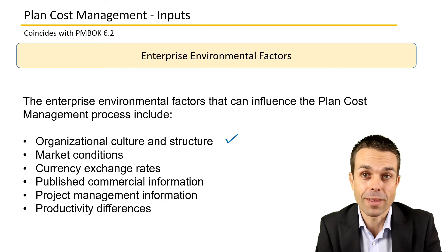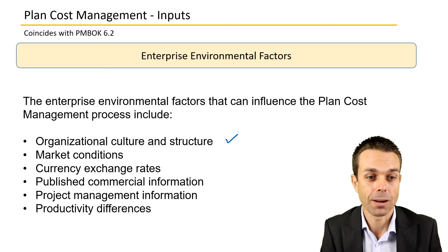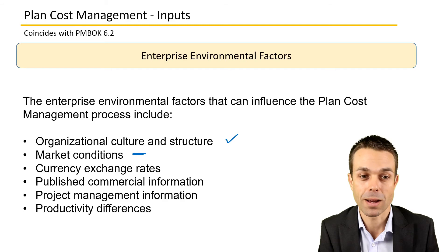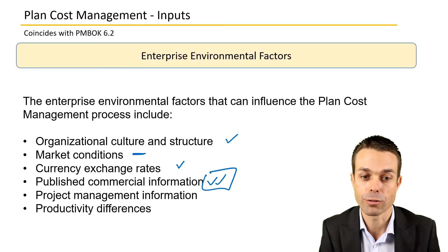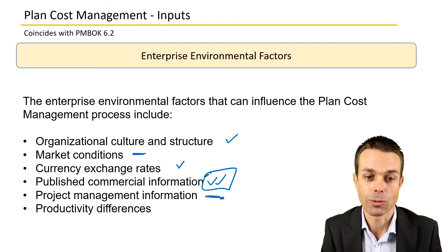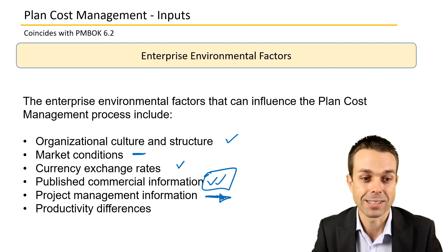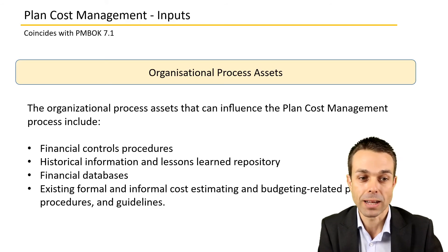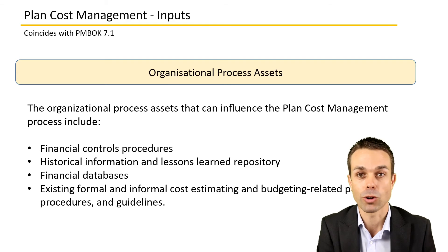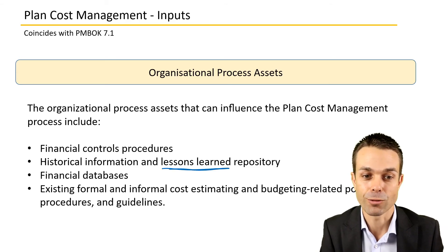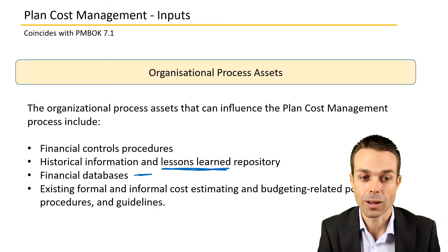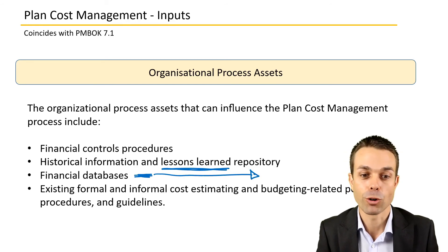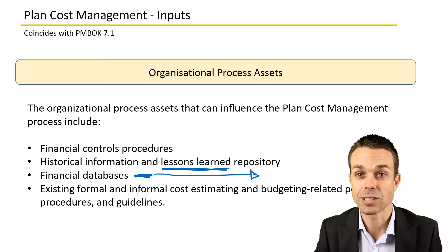Enterprise environmental factors include organizational culture and structure — how is work done, are there certain formal processes to follow? Market conditions that might impact cost management, currency exchange rates, and published commercial information like cost databases are also relevant. Organizational process assets include financial controls procedures, historical information and lessons learned from other projects, financial databases, and existing formal and informal cost estimating and budgeting-related policies, procedures, or guidelines.